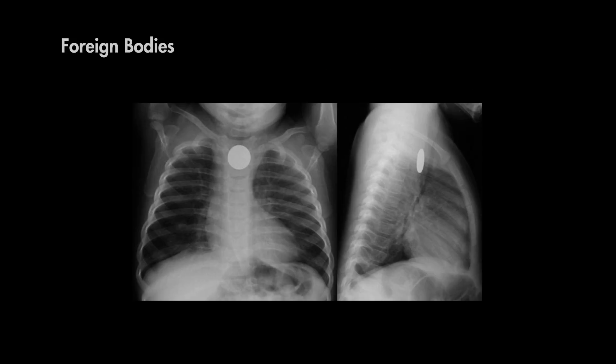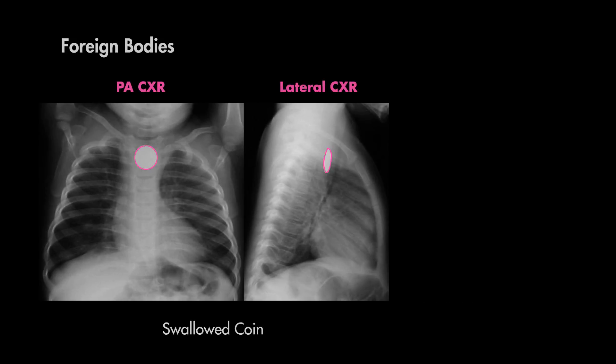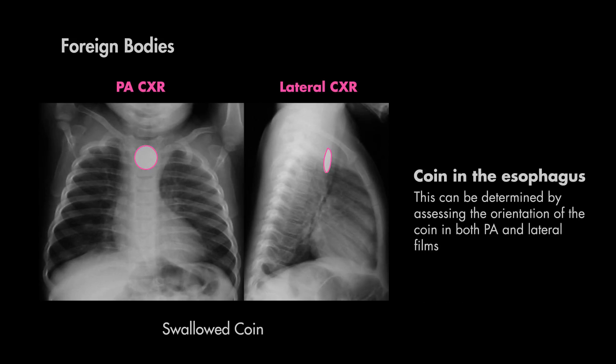Here's another x-ray with a foreign body — can you guess what the object is? If you guessed a coin, then you're right. This is a pediatric patient who swallowed a coin, which is now lodged in the esophagus. You can see how helpful the PA and lateral film is in determining the location of the foreign body and the approximate dimensions of the object.